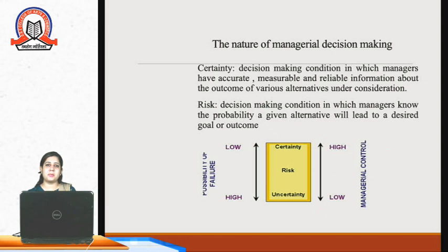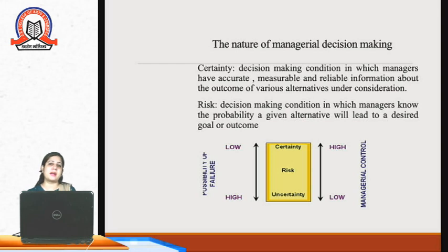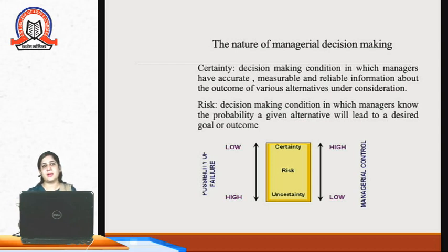Decision making involves certain risk factors, uncertainties, and certainties in the organization. We have measurable and accurate elements with reliable information. However, some things carry risk because the environment is very uncertain. Certain activities are completely dependent on external environmental factors such as political, social, legal, and technological factors, which are very unpredictable in nature. Decision making is associated with all three elements: certainty, risk, and uncertainty.